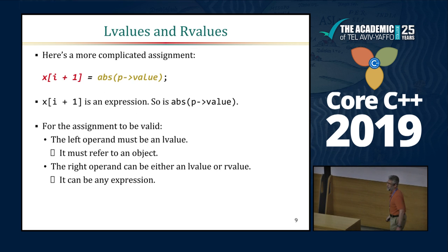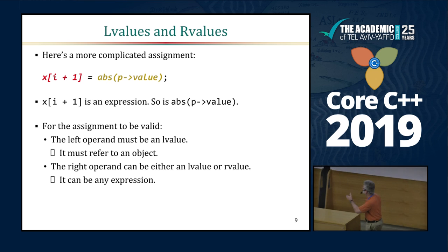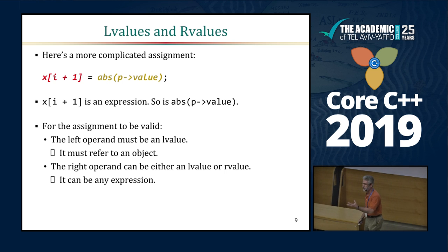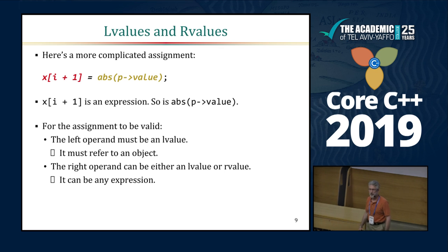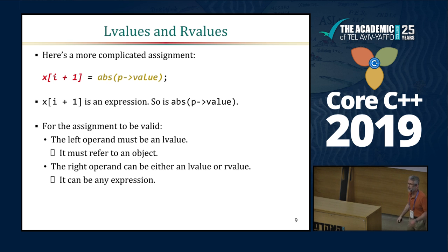Here's a slightly more complicated example with non-trivial expressions on both sides. The expression x sub-i plus 1 and the call on the abs function are each expressions. For any assignment statement to be valid, the sub-expression on the left must be an L-value. On the right-hand side, it can be anything — either an L-value or an R-value.